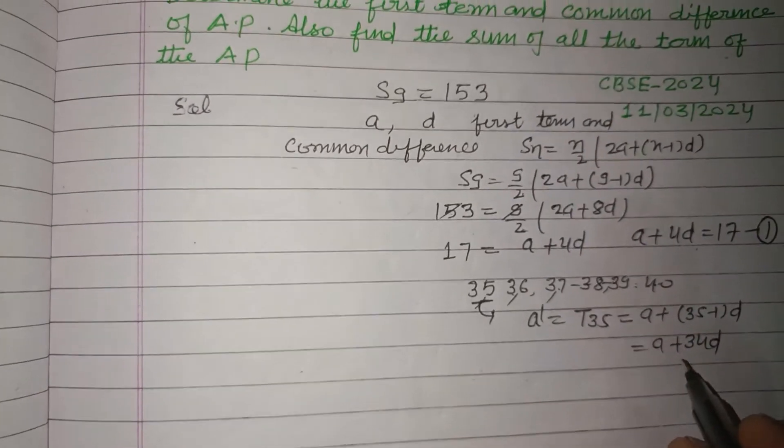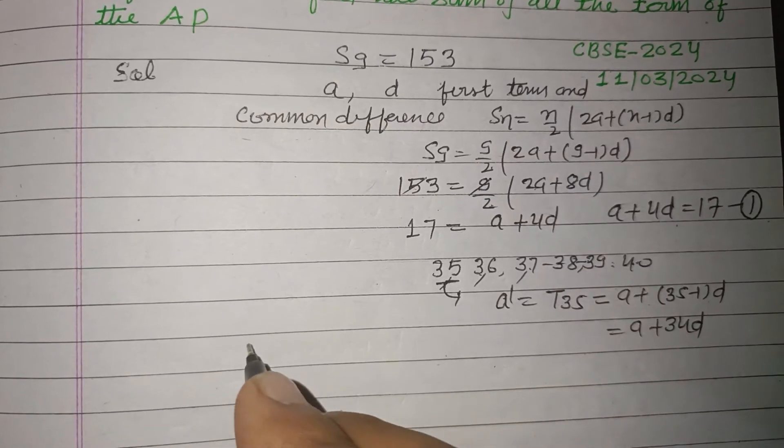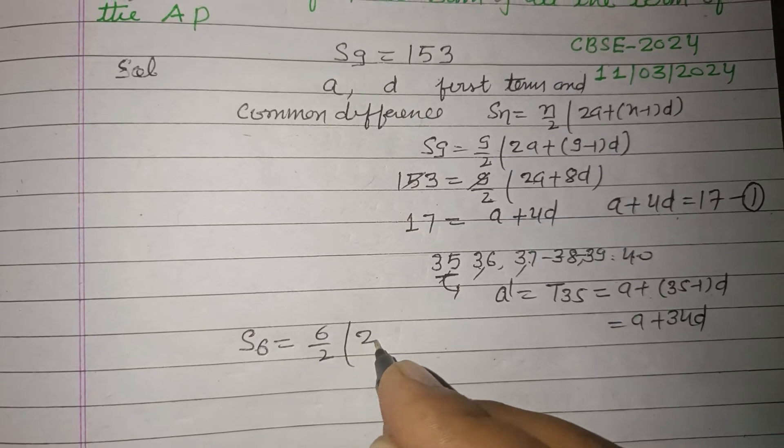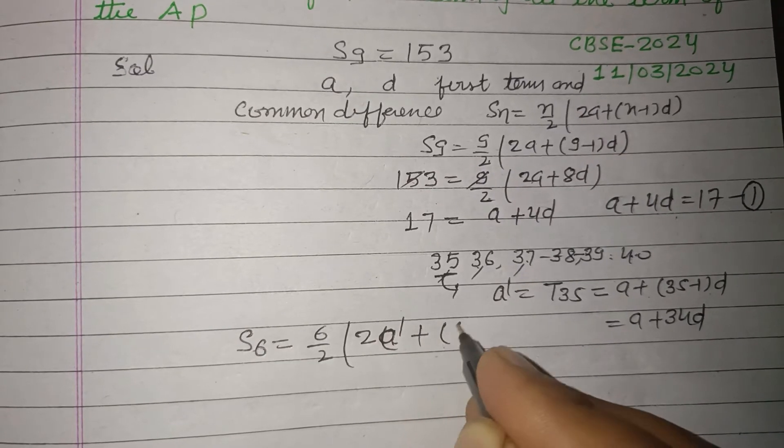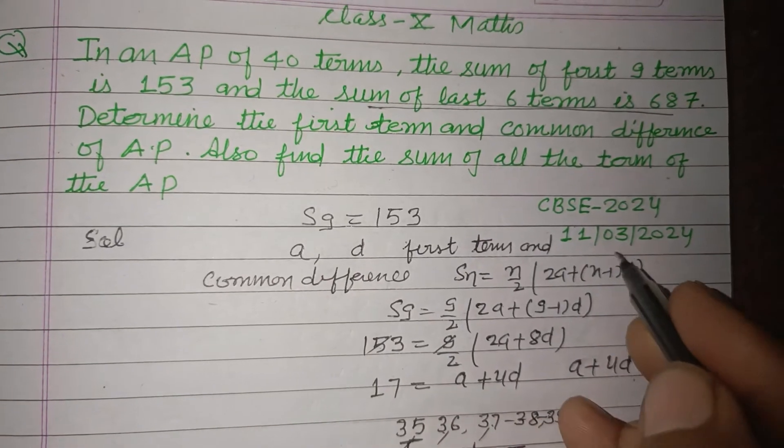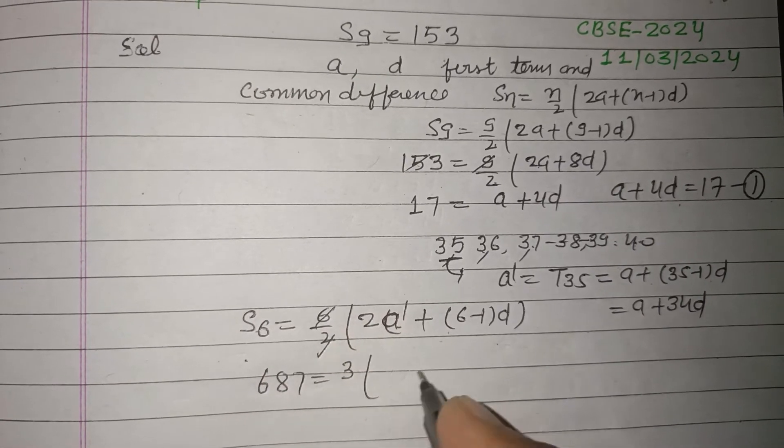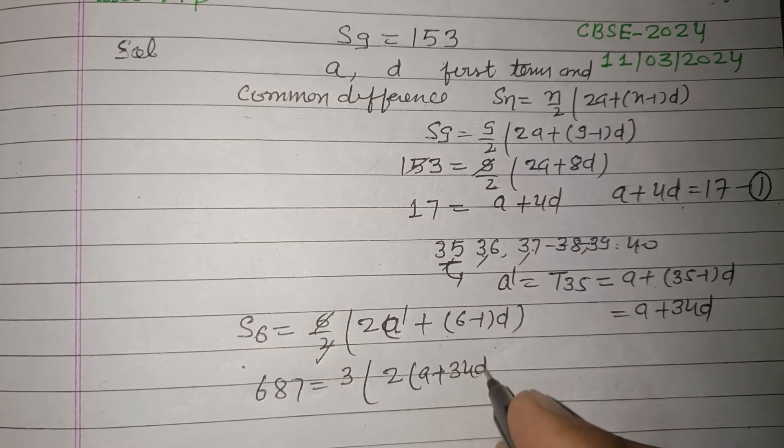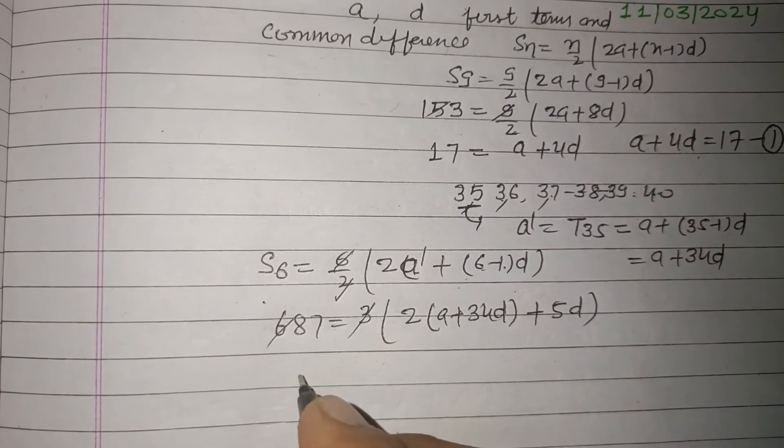Therefore sum of 6 terms equal to 6 by 2 times 2A dash plus 6 minus 1 into D. And it is given to us 687. So 687 equal to 3 times 2 times A dash is A plus 34D plus 5D.